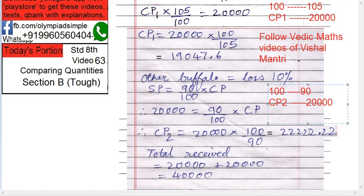The answer for CP2 is 22,222. Again, follow the Vedic maths videos — it will be easier and won't eat your time. So now you have both cost prices: CP1 is 19,047 and CP2 is 22,222.